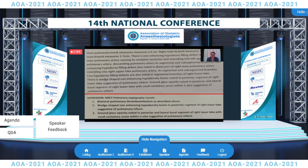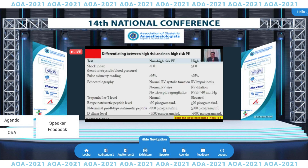Once you get this report, we need to find out whether the patient fits into high-risk or low-risk categories, as this affects the treatment approach. High-risk indicators include a shock index greater than 1, right ventricular hypokinesia, right ventricular dilatation, right ventricular systolic pressure greater than 40, elevated troponin, and other elevated markers. This particular case had all of these findings, making it a very high-risk pulmonary embolism. Risk stratification is important because in high-risk cases, mortality is more than 15%.